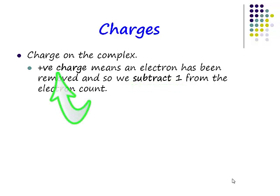So electrons are negatively charged. If something is cationic, that means we need to subtract. So if something has a charge of plus one, we need to subtract one from the electron count. If something has a charge of minus one, then we need to add one to the electron count.